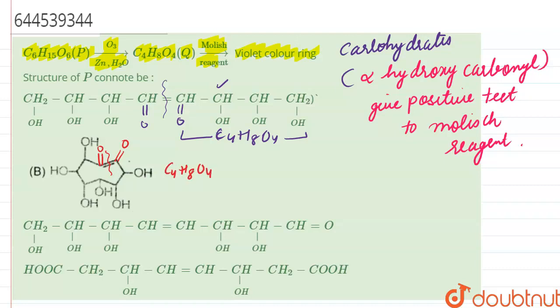In option C, if this bond gets broken, we will get a double bond O over here and a double bond O over here.